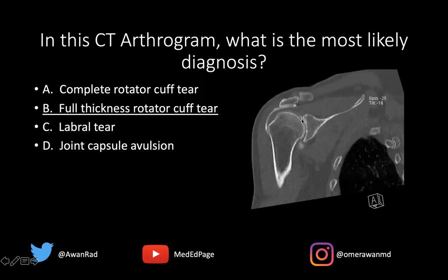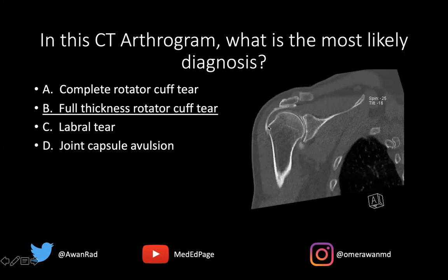If we take a look here, in a CT arthrogram we have dense contrast distending the glenohumeral joint. The key to all arthrogram cases is to understand where contrast is and where contrast should not be. We also have contrast in the subacromial subdeltoid bursa — it's underneath the acromion, going past the greater tuberosity of the humerus. The glenohumeral joint capsule does not extend past the greater tuberosity, so if you see contrast going past it, you can be confident it's in the subacromial subdeltoid bursa.